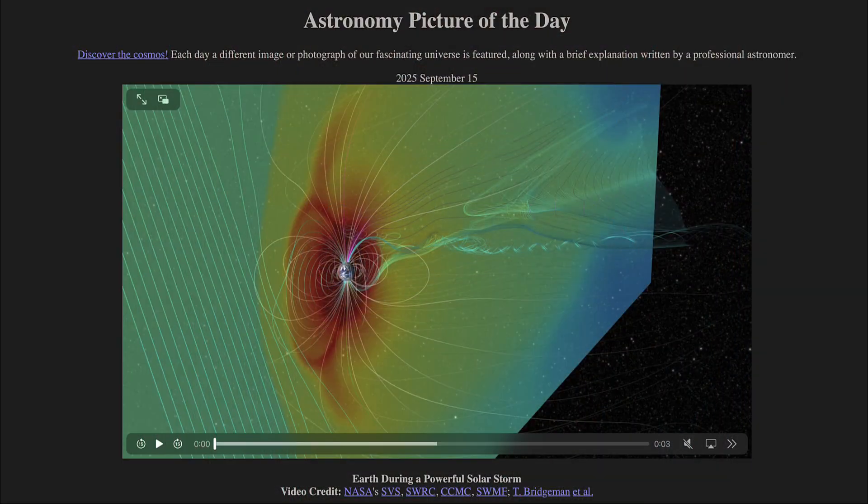So that was our picture of the day for September 15th of 2025. It was titled Earth During a Powerful Solar Storm. We'll be back again tomorrow for the next picture, previewed to be Stellar Cathedral. So we'll see what that is about tomorrow. And until then, have a great day, everyone. And I will see you in class.